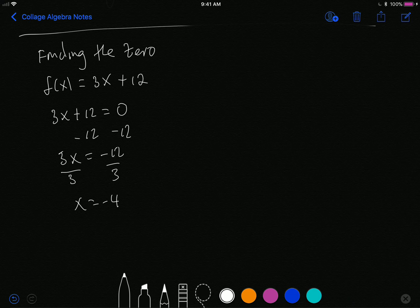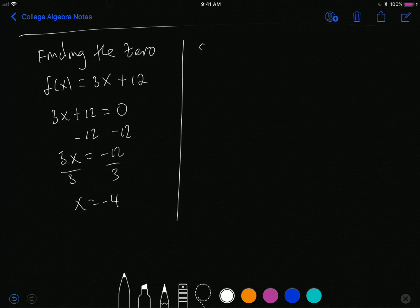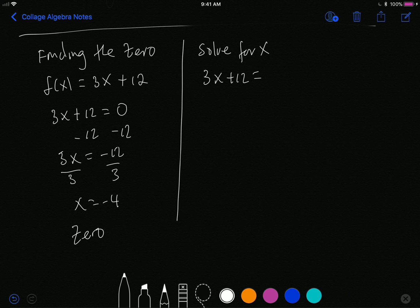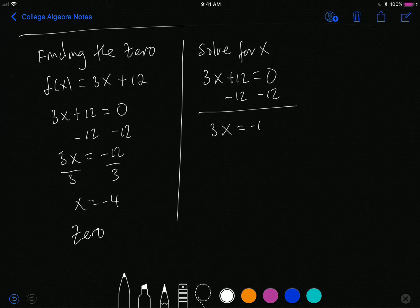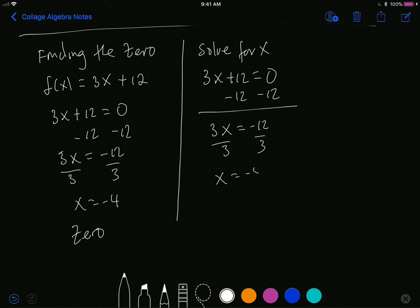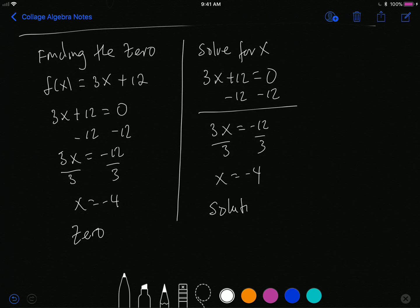So we see negative 4 is the zero of the function. Now consider this: let's say if I ask you to solve the equation, solve for x. This right here is your zero, and I'm solving for x, but my equation right here is 3x plus 12. Notice I'm just ignoring the function notation and just say I have an equation, solve for x. Well obviously this is going to be the same information because 3x plus 12 equals zero, minus 12 minus 12, so 3x equals negative 12, divided by 3, so x equals negative 4.